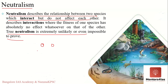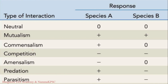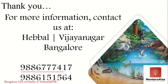To summarize: in the table provided, plus means benefiting, minus means negatively affected, and zero means no effect. Remember neutralism, mutualism, commensalism, competition, amensalism, predation, and parasitism — and how the interacting organisms are affected in each case. This is a straightforward concept, but exam questions may give you an example interaction and ask you to classify it. Thank you for watching; please write any doubts in the comment section.